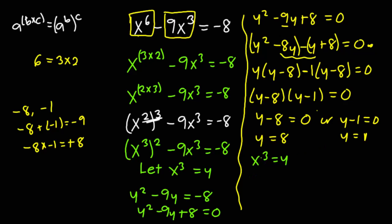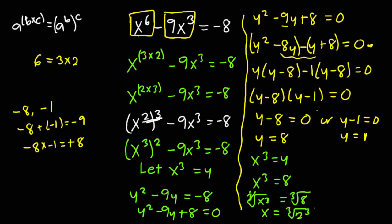If y is equal to 8, then x cubed becomes equal to 8. I'm going to take the cubic root of both sides. The cube cancels the cubic root, and x equals the cubic root of 8. The cubic root of 8 can be expressed as the cubic root of 2 exponent 3, and therefore x becomes equal to 2.